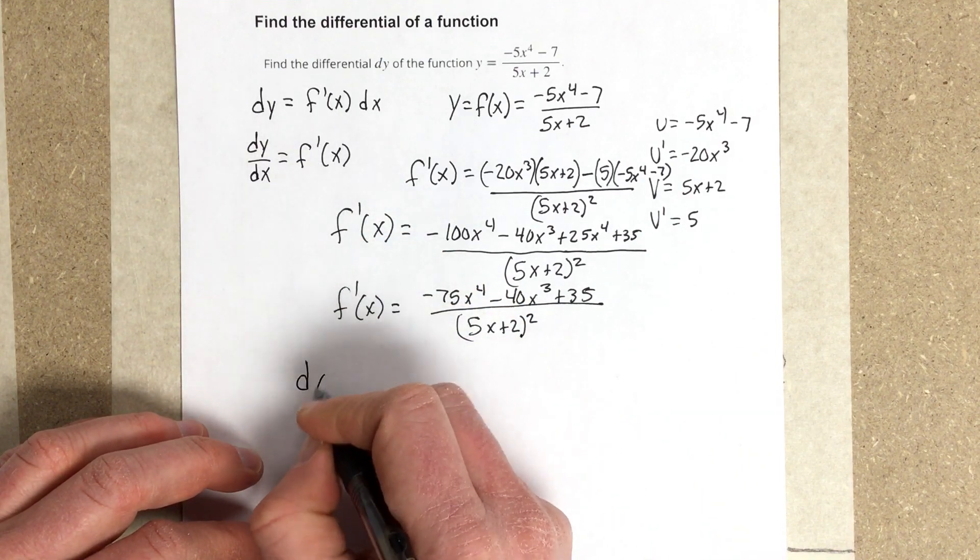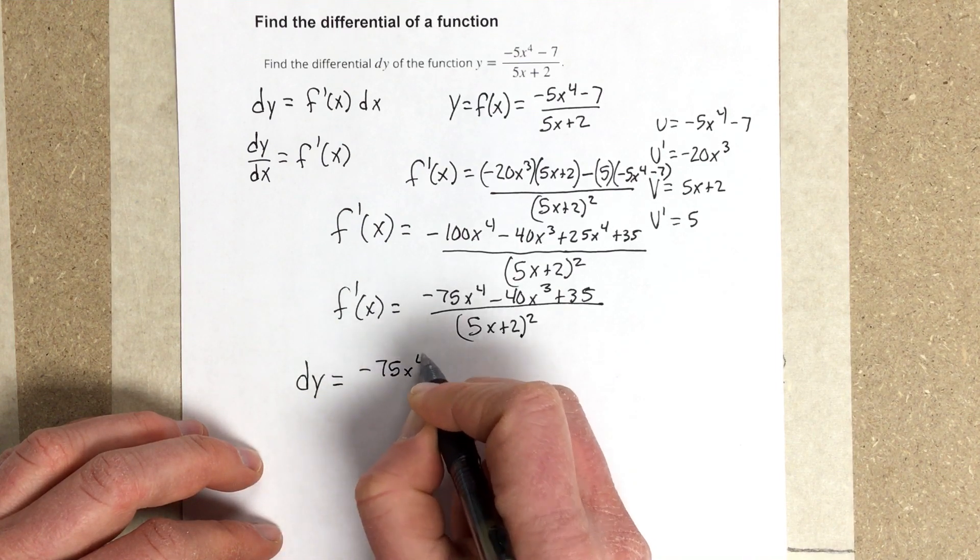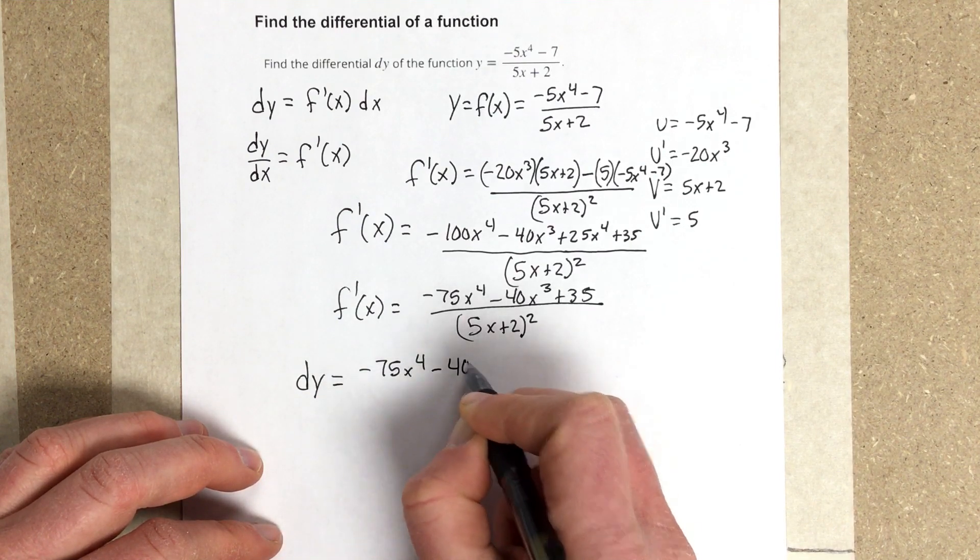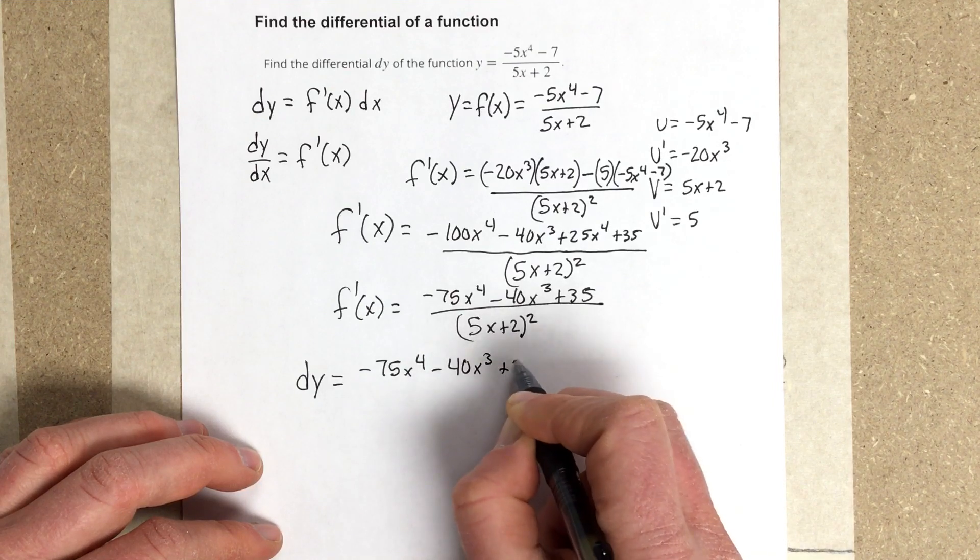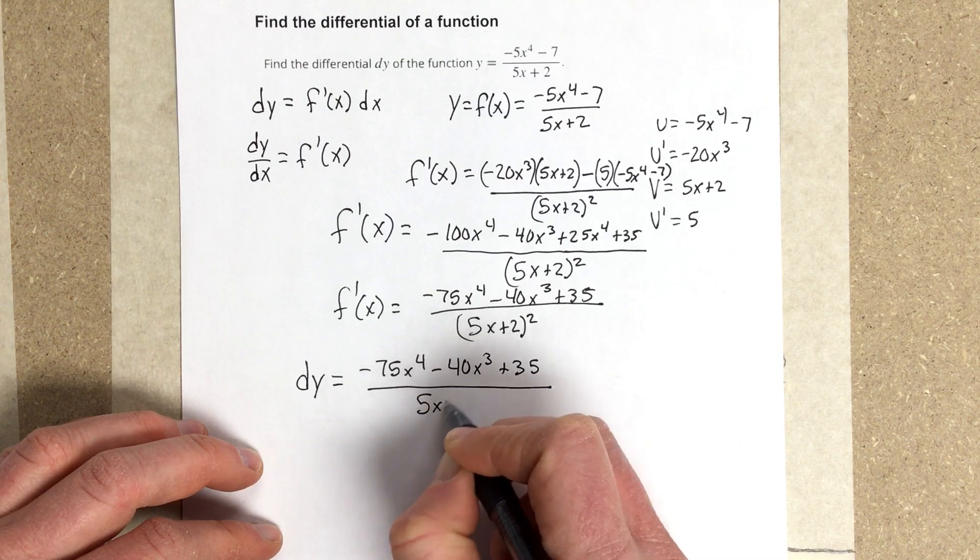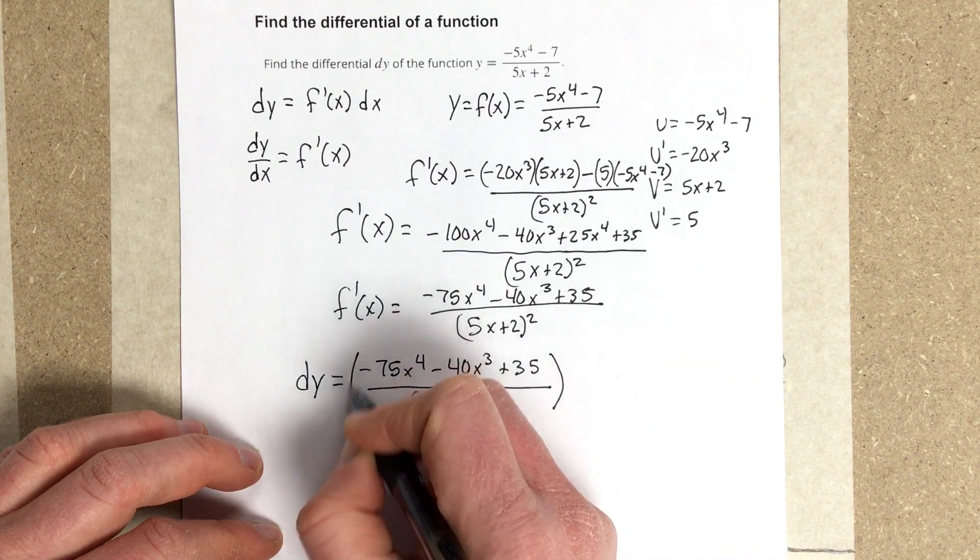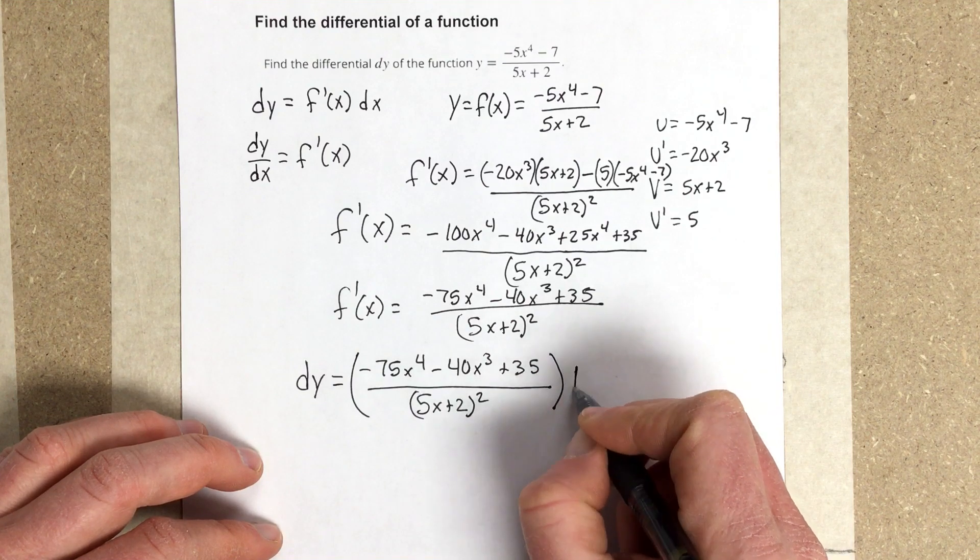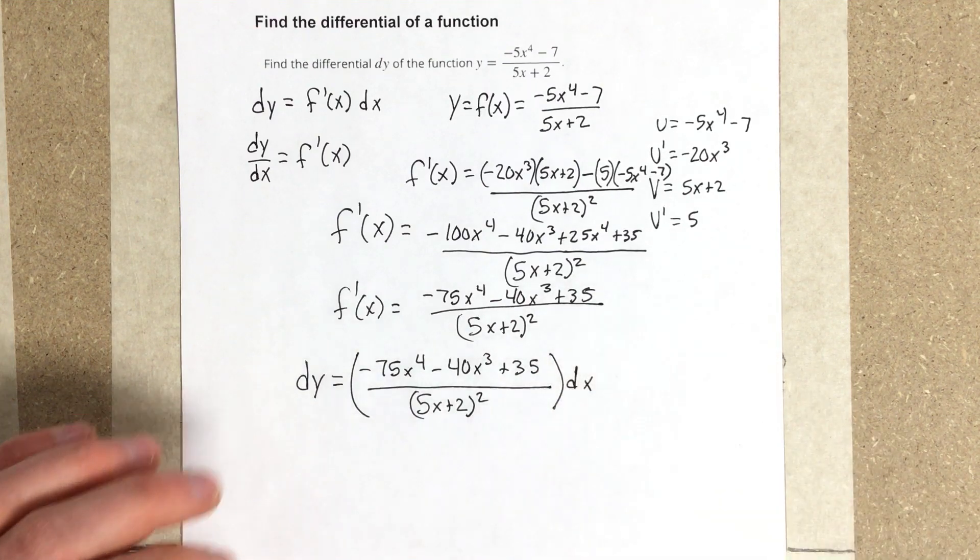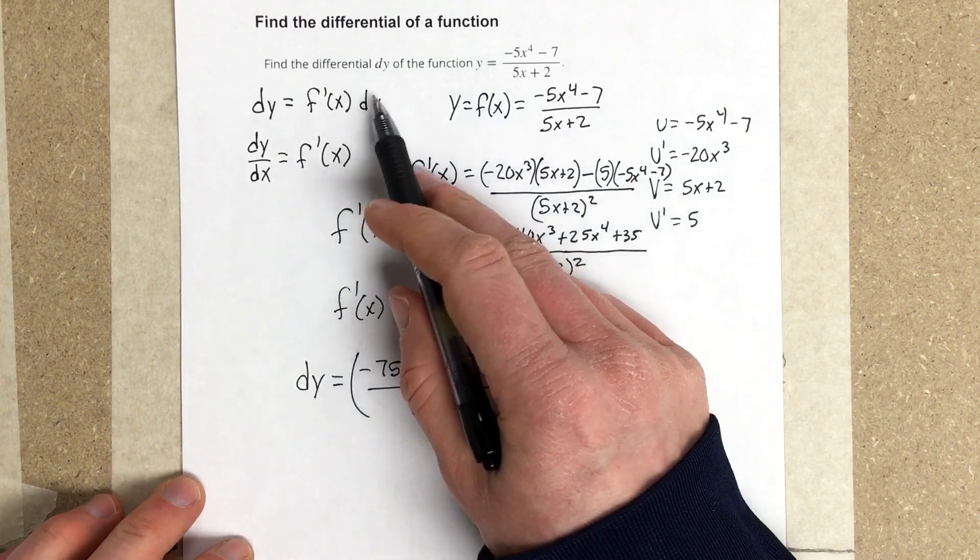Now I take this f prime of x and I use the differential equation. So I have dy is equal to negative 75x to the 4th minus 40x cubed plus 35 divided by 5x plus 2 squared, all multiplied times the differential for x, and that is dy, or the differential dy for that function.